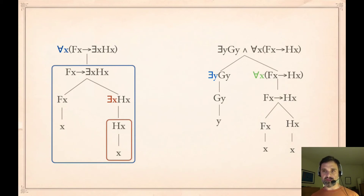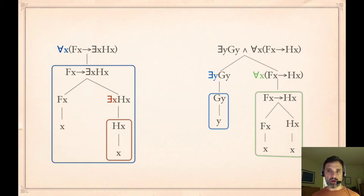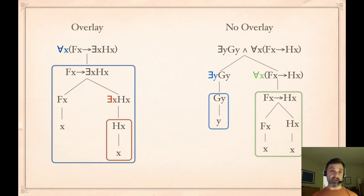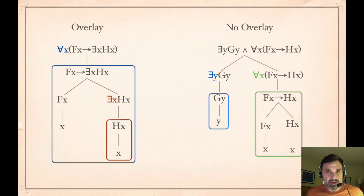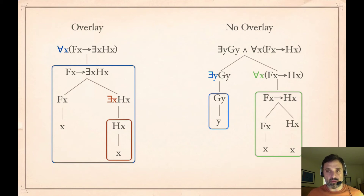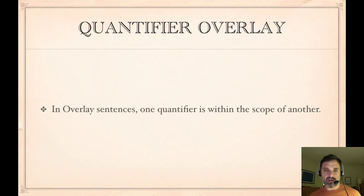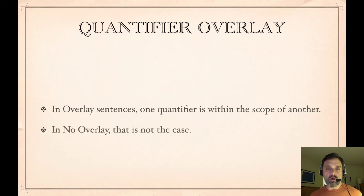If you look at the other sentence — 'some y, Gy, and for all x, if Fx then Hx' — we again have two quantifiers. In one case we have 'some y' which has scope over Gy, and then we have 'all x' which has scope over 'if Fx then Hx.' In the sentence 'for all x, if Fx then some x Hx', the 'some x' is within the scope of the 'for all x', and we call that quantifier overlay. We don't have quantifier overlay in the other sentence because neither quantifier has another quantifier within its scope. More generally, in a sentence with quantifier overlay, one quantifier is within the scope of another — one quantifier is beneath another in the tree. In a no-overlay sentence, we don't have that.